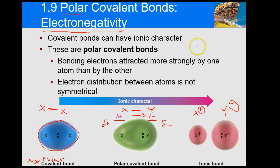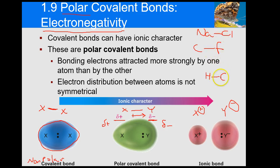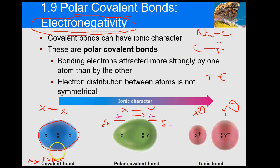Now if I give you a compound — say carbon attached to F, or sodium attached to Cl, or hydrogen attached to carbon — you should be able to predict the types of bonds: ionic, polar covalent, or nonpolar covalent. The way you determine that is by electronegativity. You need to understand the electronegativity of the atoms to determine what type of bond it will be. We'll come back to these examples.